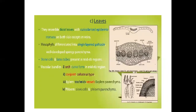Leaves: they resemble dicot leaves with cuticularized epidermis. Stomata are present on both sides except on veins. Mesophyll is differentiated into a single-layer palisade and well-developed spongy parenchyma. Stone cells and laticiferous cells are present in the mid-rib region. Vascular bundles are curved and form in the mid-rib region; they are conjoint and collateral. Xylem has tracheids, vessels, and xylem parenchyma; phloem has sieve cells and phloem parenchyma.